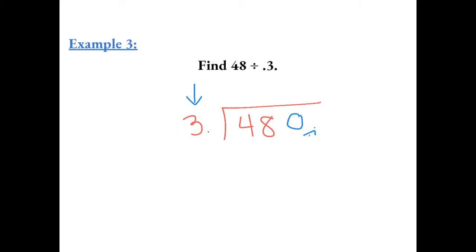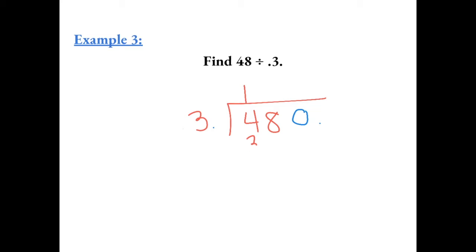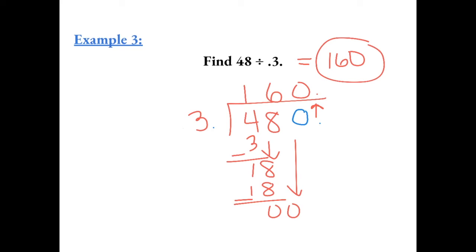So now we have 480 divided by 3. 3 goes into 4 one time, 3 goes into 18 six times, and then 3 goes into 0 zero times. Carry up the decimal. Because the decimal is at the back of the number, it's just 160 as a whole number.